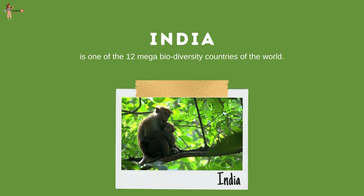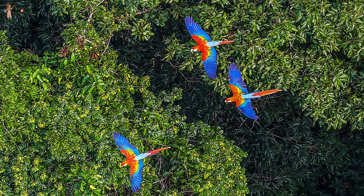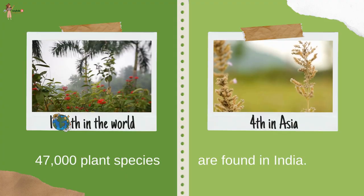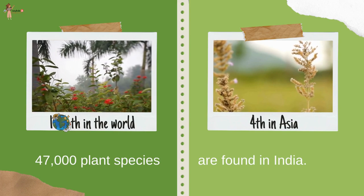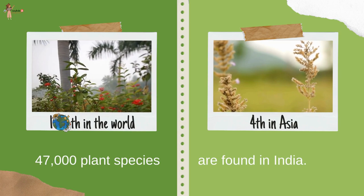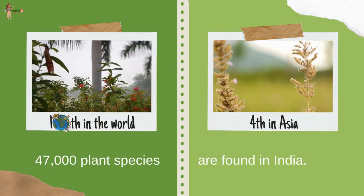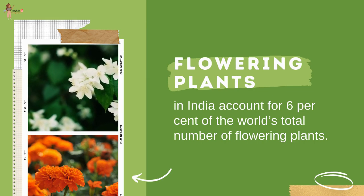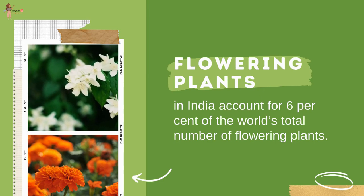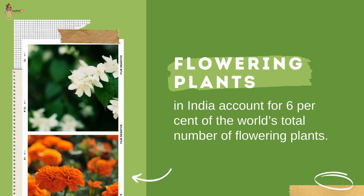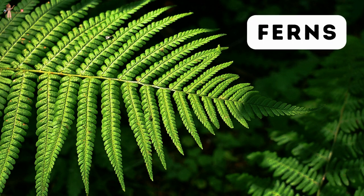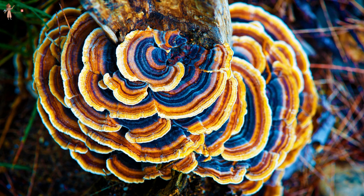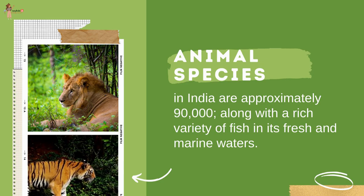India is one of the 12 mega biodiversity countries of the world, whereas Brazil is the earth's biodiversity champion. With about 47,000 plant species, India occupies 10th place in the world and 4th in Asia in plant diversity. There are about 15,000 flowering plants in India, which account for 6 percent of the world's total number of flowering plants.